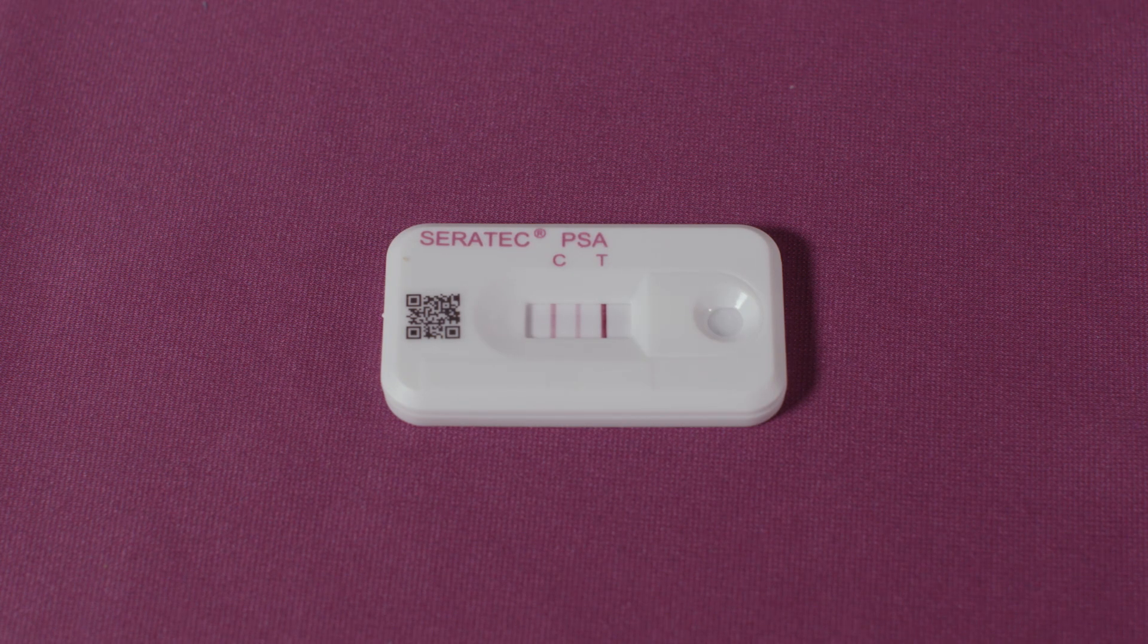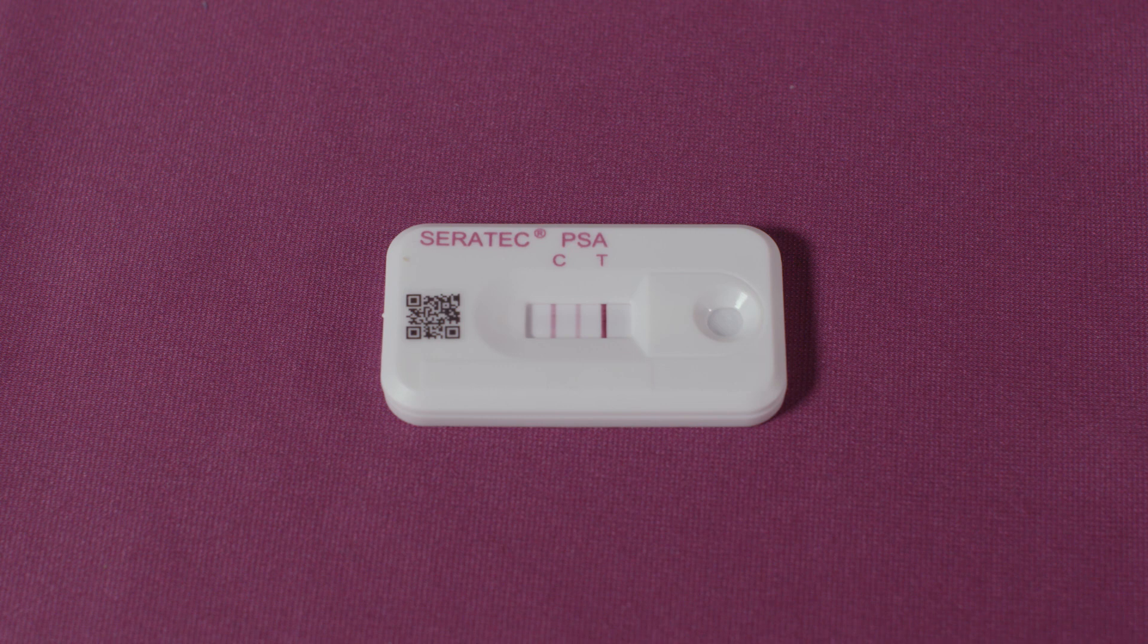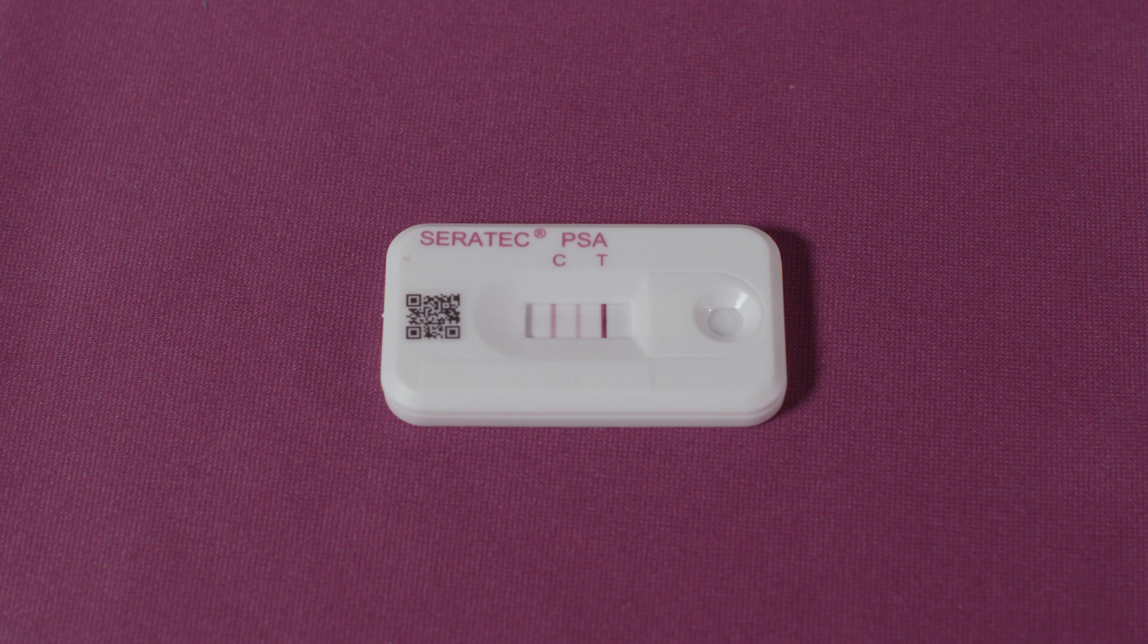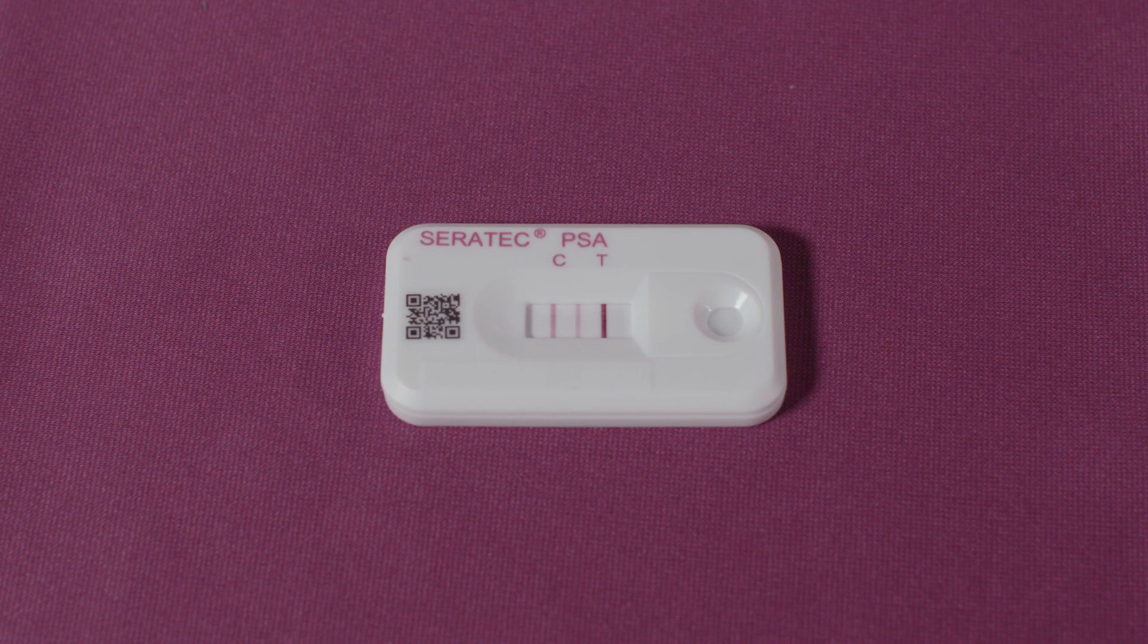The Ceratec PSA semi-quant test is an immunochromatographic assay for the rapid detection of human prostate specific antigen, or PSA, in extracts from evidentiary stains. PSA is a protein found in high amounts in human seminal fluid and is a recognized marker for human semen stains.